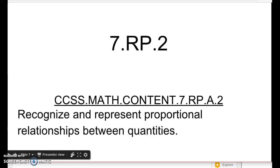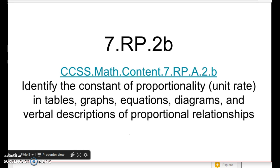Hi guys, Mr. Murphy again. We're doing the second part of standard 7.RP.2, ratios and proportions. This basic standard is recognizing and representing proportional relationships between two quantities. We are looking at 7.RP.2b, that's identifying the constant of proportionality, the unit rate, in tables, graphs, equations, diagrams, and verbal descriptions of proportional relationships.